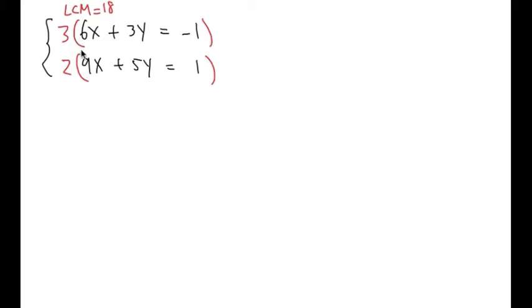However, I do not want both to be positive. I want the signs to be alternate. Since this is already going to be positive 18x, I would like to multiply by negative 2 throughout the second equation so I can get a negative 18x.